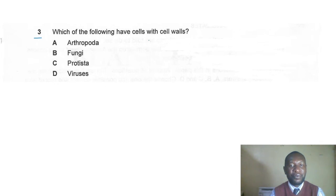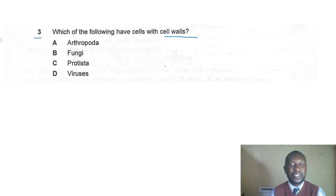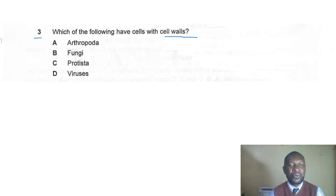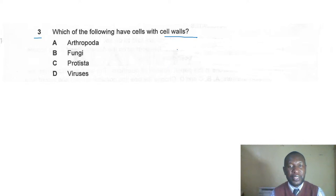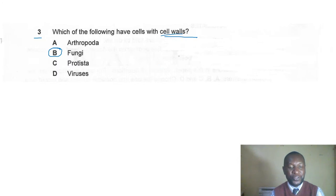Question three: which of the following cells have cell walls? Is it Arthropoda, Fungi, Protoctista, or Viruses? The correct answer is B — Fungi. Kingdom Fungi have a cell wall, but it is made up of chitin, not cellulose.